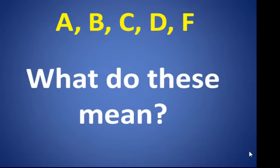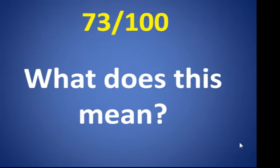Thinking about how we grade, typically students get A, B, C, D, or F, and we don't really know what these mean. Or maybe we have a project worth 100 points and a student gets 73 out of 100, and again, we don't really know what this means.